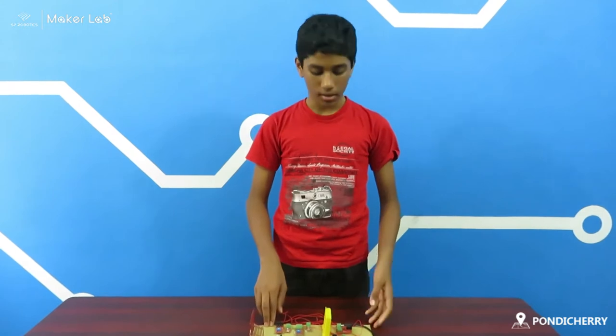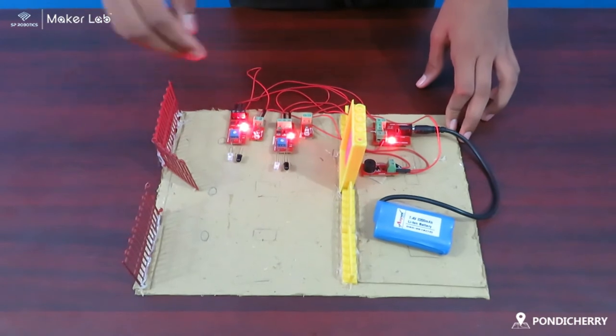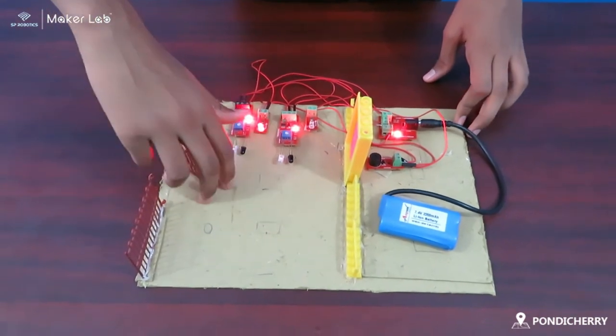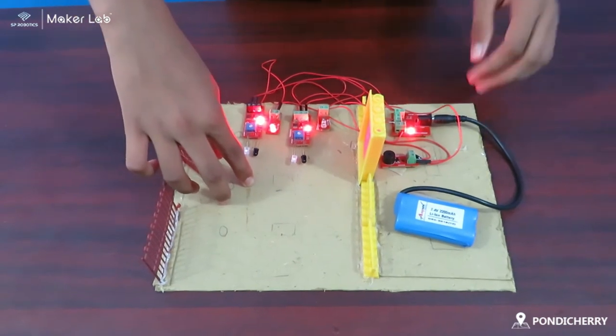Here I have done my foundation level project, the Intruder Alert System. Working of my model: the two sensors sense if somebody comes in or not. When the person comes, the first sensor senses them and triggers the buzzer.